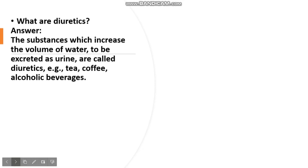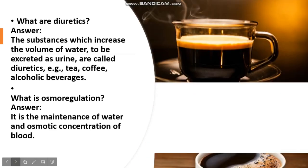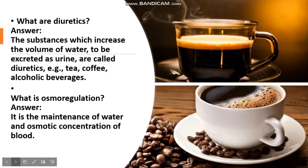What are diuretics? The answer is substances which increase the volume of water to be excreted as urine are called diuretics. Examples: tea, coffee, and alcoholic beverages. What is osmoregulation? The answer is it is the maintenance of water and osmotic concentration of blood.